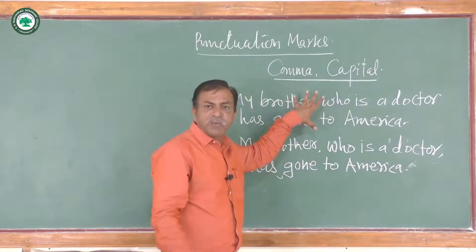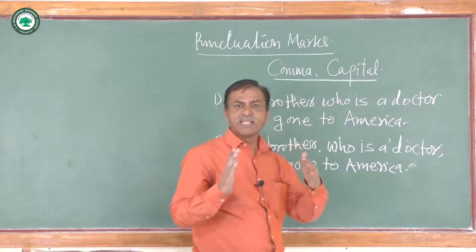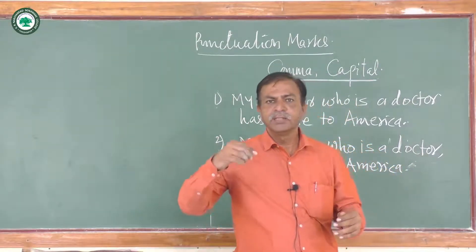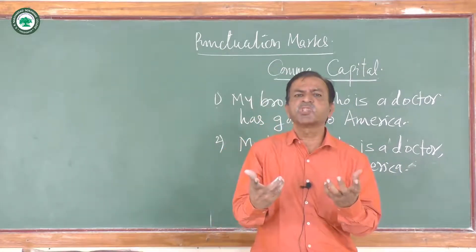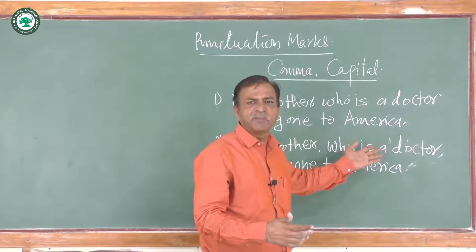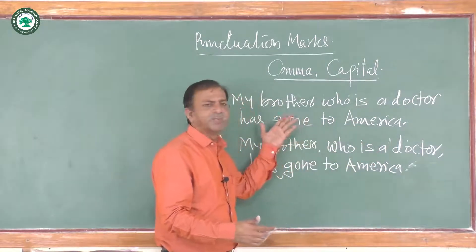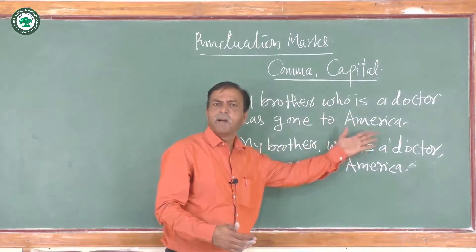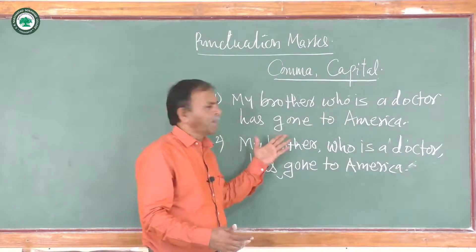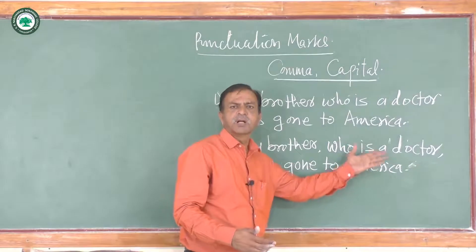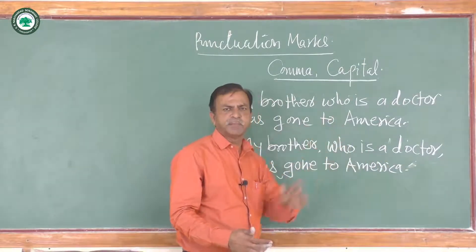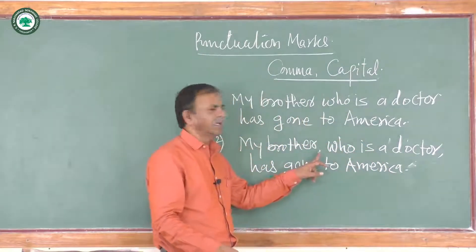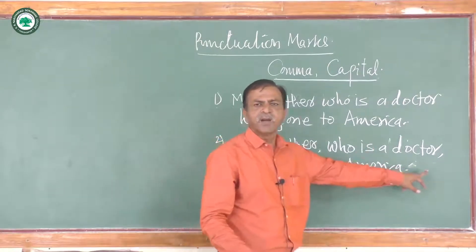As far as the comma is concerned, the comma is important because if you put the comma at a different place, the meaning becomes changed. Here are two examples. The first example is: 'My brother who is a doctor has gone to America.' The second sentence is: 'My brother, who is a doctor, has gone to America.' In the second sentence, two commas are used — the first is after 'brother' and the second one is after 'doctor'.